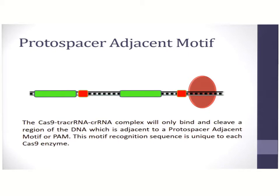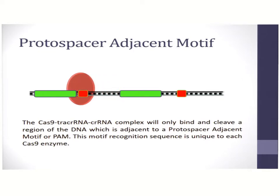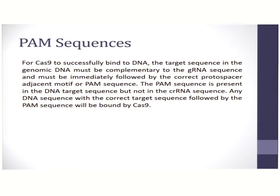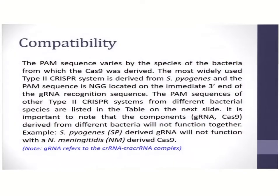In addition, there is a component known as the protospacer adjacent motif, or PAM. As mentioned in earlier modules, this motif is unique to each Cas enzyme, and the Cas9 enzyme will seek this motif prior to digestion of the DNA sequence. PAM sequences are unique to each Cas9 enzyme. If a PAM sequence is not present in a genome, it should not be utilized with its matching Cas9 enzyme — you will need to seek a Cas9 enzyme which matches with the PAM sequence available at your targeted genomic region.